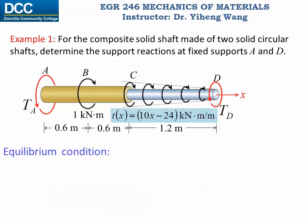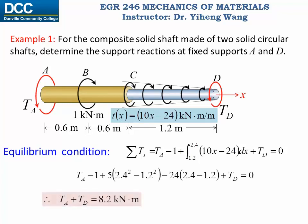Now we are ready to write the equilibrium condition. Since there is no force acting on this shaft, the only equation we can write is the resultant moment about the x-axis equals zero. This gives us TA minus 1 plus the integral of the distributed load from x = 1.2 m to x = 2.4 m, plus TD equals zero. From this we get TA + TD = 8.2 kNm. This is the only equation we can write, but we have two unknowns, so we cannot solve this with equilibrium alone — making this a statically indeterminate problem.